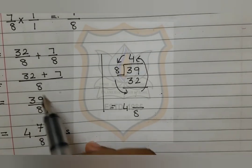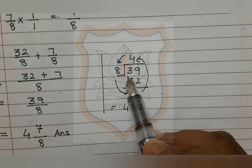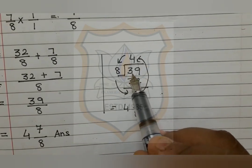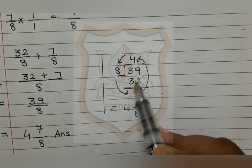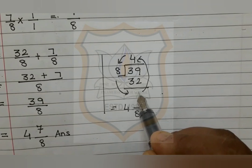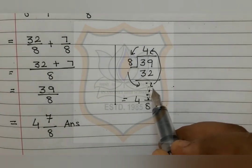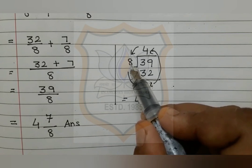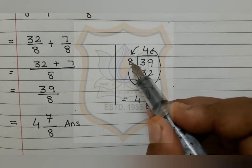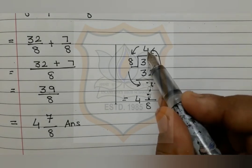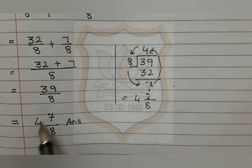We convert 39 upon 8 from an improper fraction to a mixed fraction by dividing the numerator by the denominator. 8 fours are 32; 39 minus 32 equals 7. So the remainder is 7, the quotient is 4, and the divisor is 8. These numbers move anticlockwise: our mixed fraction becomes 4 and 7 upon 8. That is our answer.